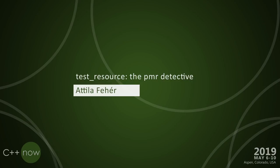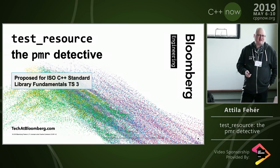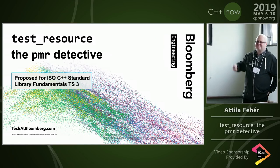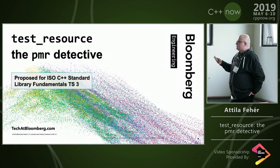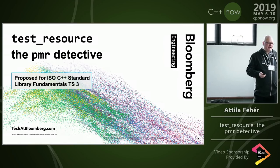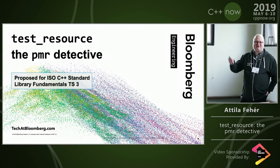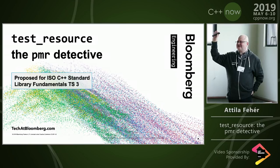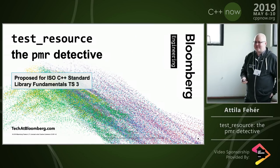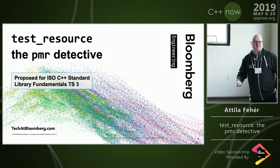This talk is about something called test_resource, which is a polymorphic memory resource. Not many of you were at John's talk just now. This thing is proposed for the ISO C++ standard library fundamentals TS3 — a technical specification that's essentially a beta test for things we seriously consider adding to the standard library.